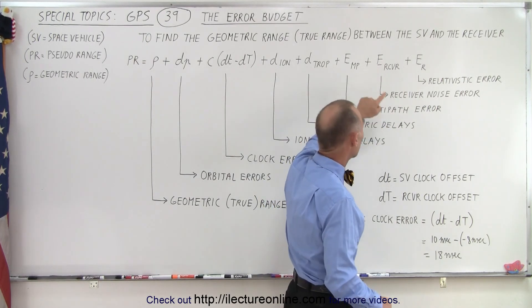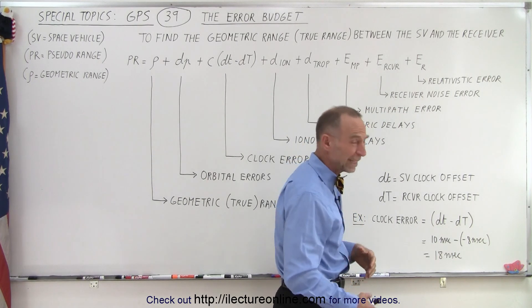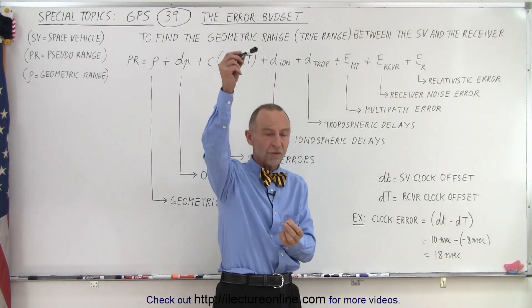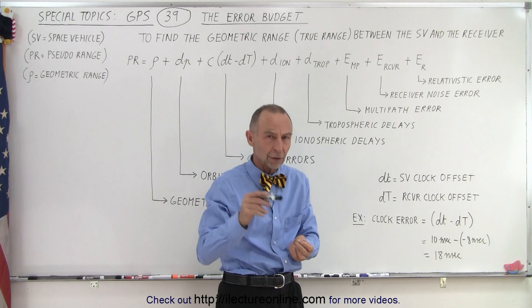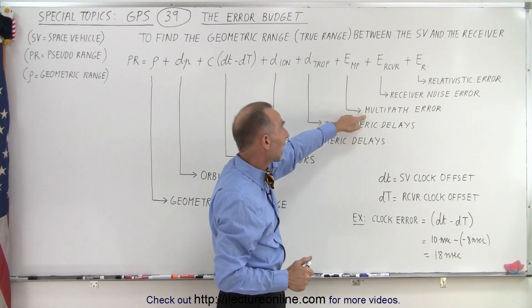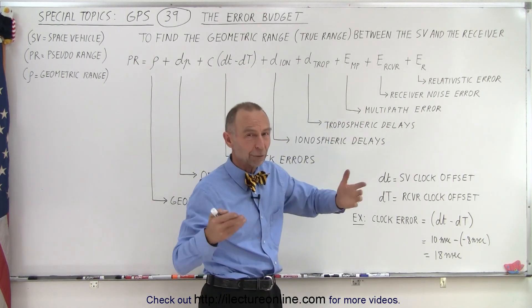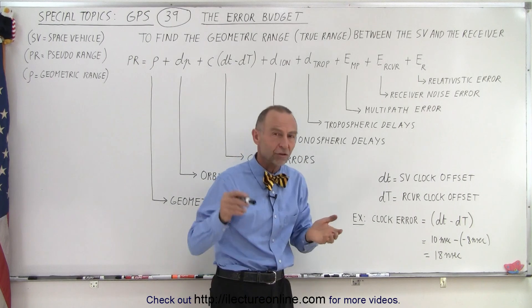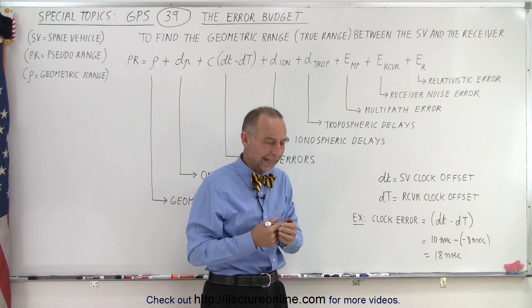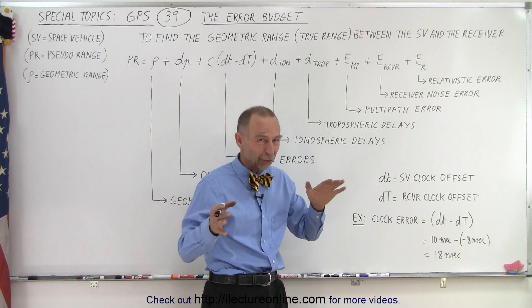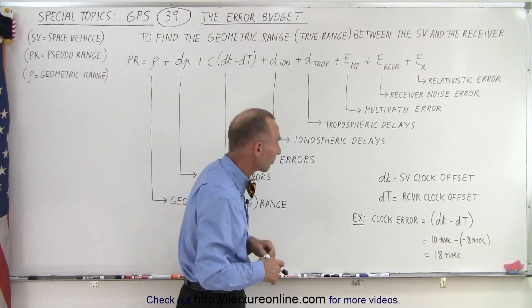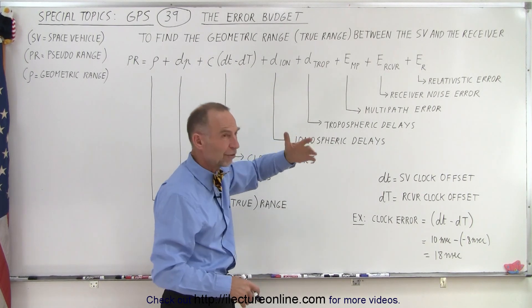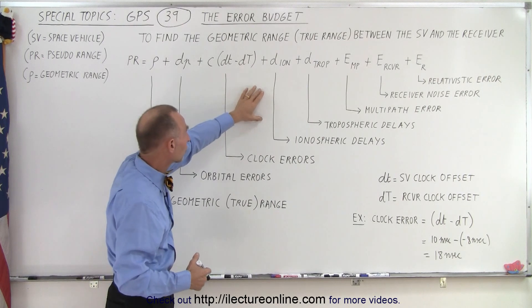We have receiver noise error. We have the multipath error, because sometimes the signal doesn't travel directly to the receiver. It bounces off a building or the side of a mountain or something like that, so we have that additional distance to account for. We have what we call tropospheric delays. There's a certain index of refraction in the troposphere, so we have some slowdown of the signal. We have to account for that, and that depends on the weather. We also have ionospheric delays in the upper atmosphere, depending upon the ionization level of the ionosphere.